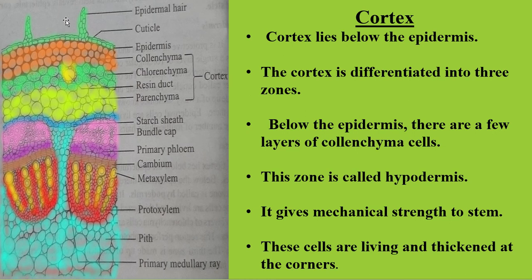Exactly below the epidermis, the cortex region lies in three different zones, shown in three different colors — orange, green, and yellow. Below the epidermis, collenchyma cells are present, which have thickening at the corners and offer mechanical strength to the stem. This layer is called the hypodermis.